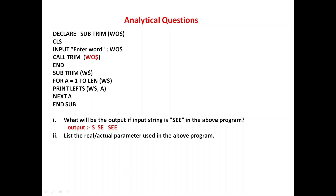If you don't know, check the link in the description and watch two or three videos — you will be 100% clear. Next: list the real or actual parameter used in the above program. Actual parameter means the variable which is used to pass a value to the sub-procedure or function procedure. The actual parameter here is W$ — also called argument, real parameter, or actual parameter; these are synonyms.